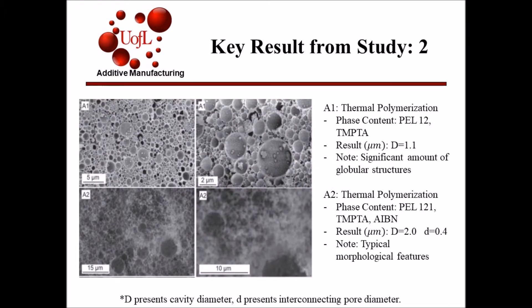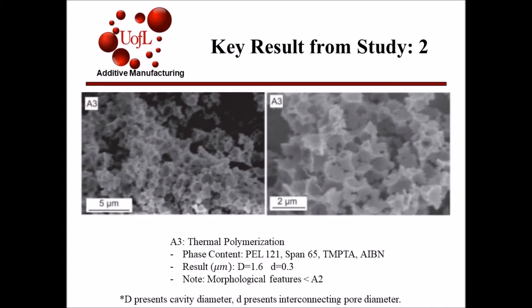This slide shows the first two trials, A1 and A2. Water and oil was used as an initiator for A1 and PEL-121 as a surfactant. This trial showed significant globular structures. A2 replaced the water and oil with AIBN. This change showed more typical morphological features but the pores were still not uniform. Trial A3 added Span 65 as an additional surfactant and produced smaller size morphological features than A2.